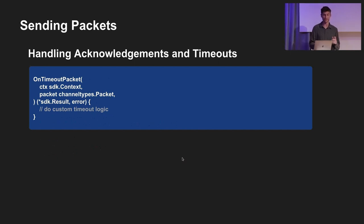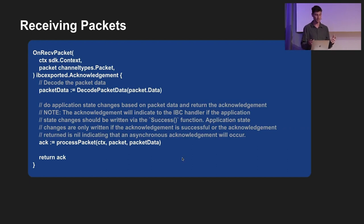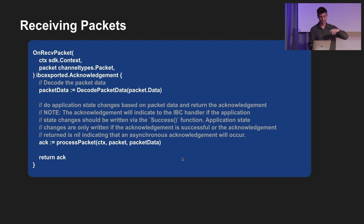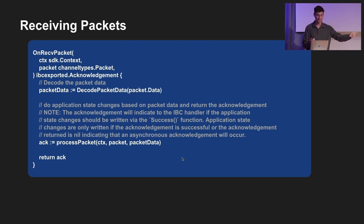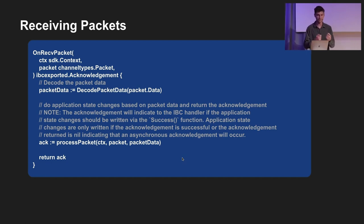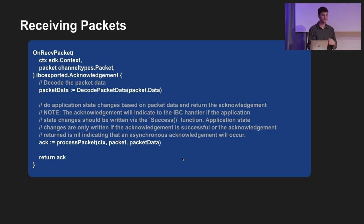The other end of the problem is receiving packets - this is done as another callback function you outline in your interface. It gets called whenever someone sends a packet across. Just as you might receive an acknowledgement, now you're the one sending the acknowledgement back. Once you've processed the packet data and done whatever state transition you need to do, you return an acknowledgement - either it succeeded or it failed.